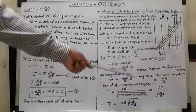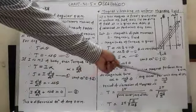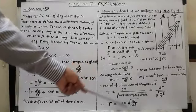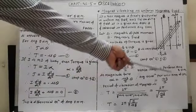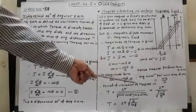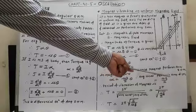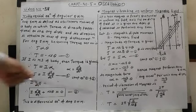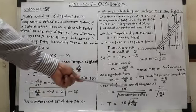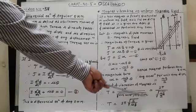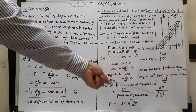Therefore, the period of vibration of this magnet is given by T = 2π / √(angular acceleration per unit angular displacement) = 2π√(I / μB).